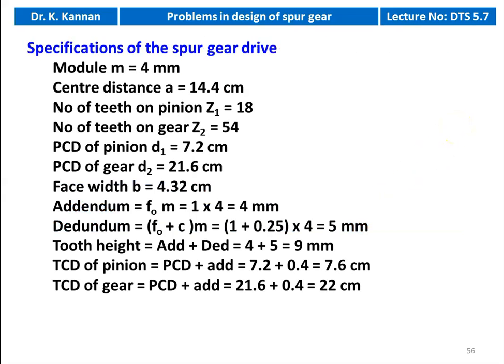We write down the specification of the gear drive: module 4 millimeter, center distance 14.4 centimeter, number of teeth z1=18, z2=54, PCD of pinion D1=7.2 centimeter, PCD of gear D2=21.6 centimeter, face width 4.32 centimeter, addendum = 1×m = 4 millimeter, dedendum = (1+0.25)×m = 5 millimeter, tooth height = addendum + dedendum = 9 millimeter, tip circle diameter of pinion = 7.2+0.4 = 7.6 centimeter, tip circle diameter of gear = 21.6+0.4 = 22 centimeter.